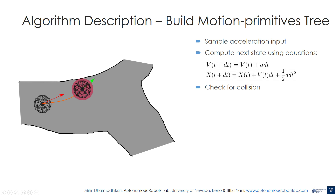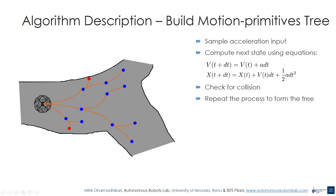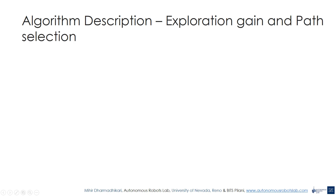We then check if this state is in collision with any objects using the volumetric map generated by VoxBlocks. If the state lies in free space, it is then added to the tree. Otherwise, this state is rejected and a new acceleration is sampled. This procedure is repeated for all states added to the tree until we form a tree of desired specifications.